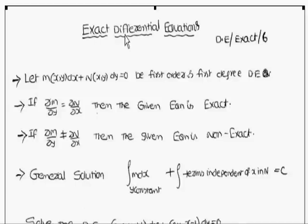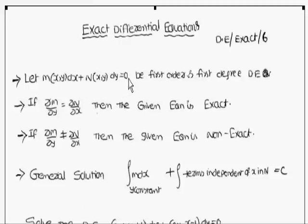Today we are going to discuss exact differential equations. If the equation is in the form of a function in xy times dx plus a function in xy times dy equals 0, and if it satisfies ∂M/∂y = ∂N/∂x, then the equation Mdx + Ndy = 0 is said to be an exact differential equation.